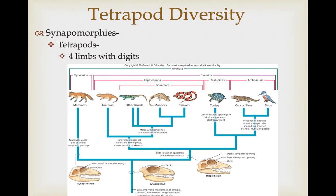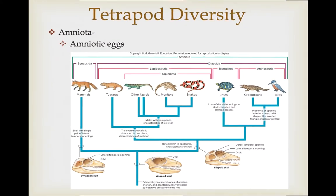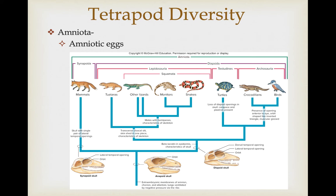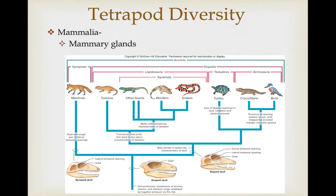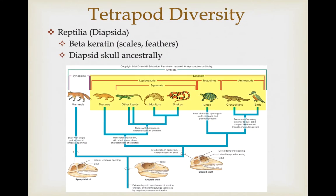The synapomorphies for tetrapods is the presence of four limbs with digits — that's how they get their name. Tetrapod means four appendages or four legs. Within the amniota, the synapomorphy that's key is the presence of an amniotic egg, which is really important in allowing them to break free of a requirement of water for reproduction. A synapomorphy for the mammals is the mammary glands themselves and hair. The reptilia, also referred to as the diapsida, has synapomorphies including beta-keratin, used in the production of scales and feathers, and as the name implies, a diapsid skull.